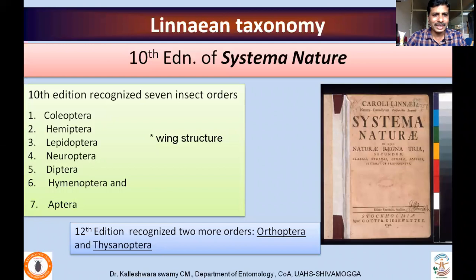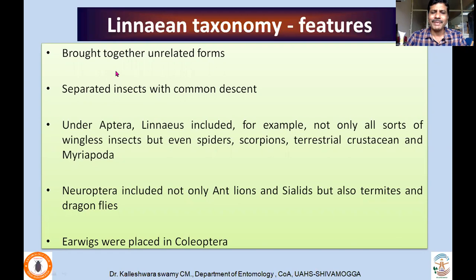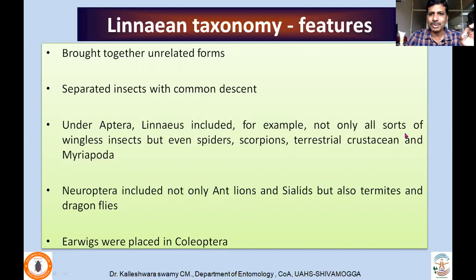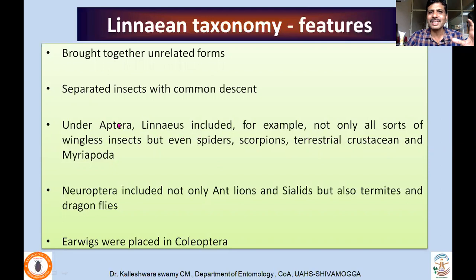In the 12th edition, he recognized two more orders, which included Orthoptera and Thysanoptera. The key feature of Linnaean taxonomy is that he brought together unrelated forms. He also separated insects with common descent, which should be in a single group, into two different groups. For example, under Aptera, Linnaeus included not only all sorts of wingless insects, but even spiders, scorpions, terrestrial crustaceans and myriapodans. These are actually wingless organisms. Now we fairly know that morphological similarity is not an indication of phylogenetic relationship.